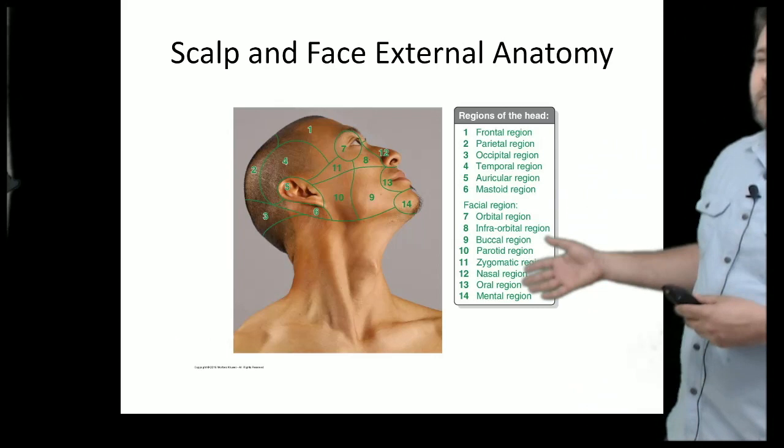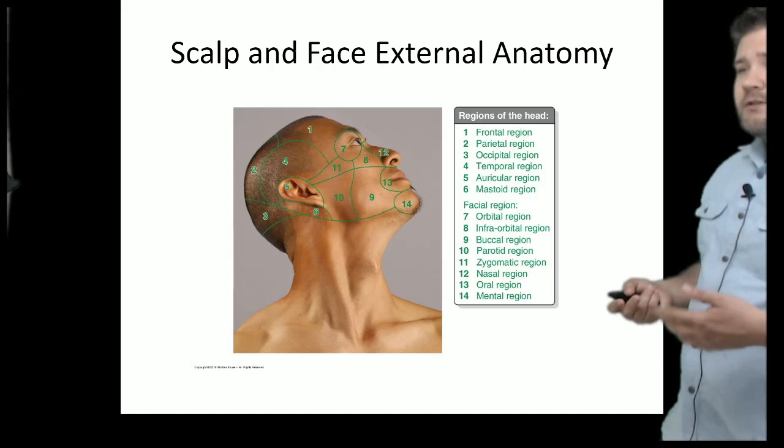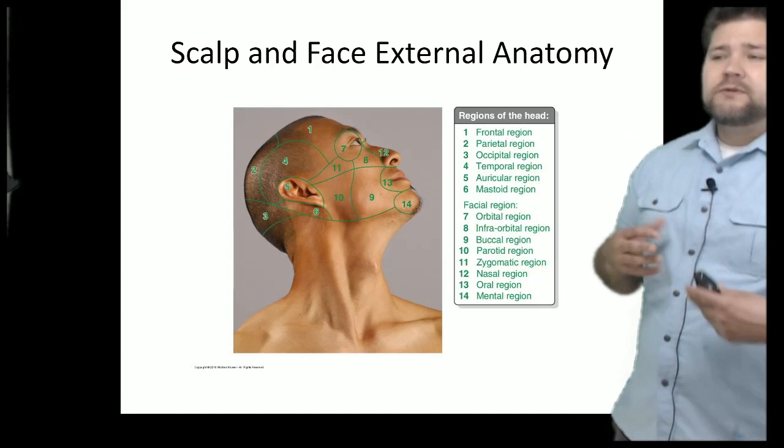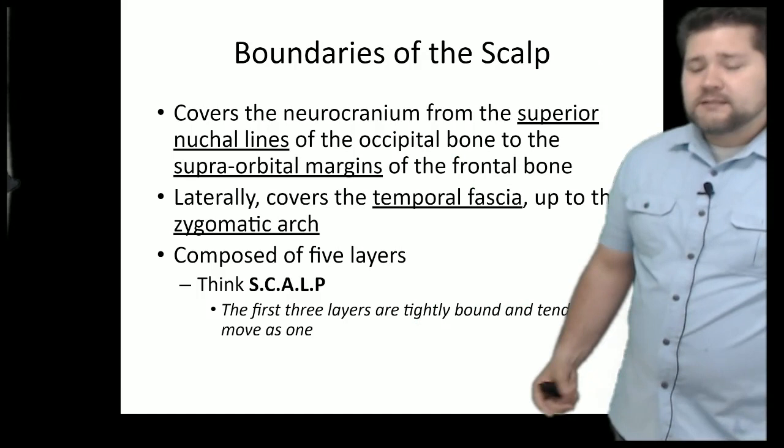When we look at the external anatomy of the face and the scalp, you can technically divide it up into 14 regions. I won't expect you to know those regions — they're just good marking points that help identify the underlying structures. Once you understand the bones and musculature, these regions will make a lot more sense, but I will never test you on any of them.